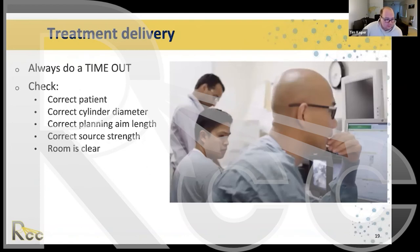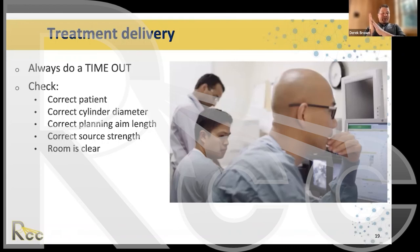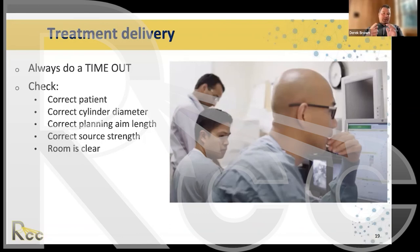Before delivering treatment, we perform a timeout to ensure: correct patient identity, correct cylinder diameter, correct planning aim length in the selected plan, correct source strength, and that no one other than the patient is in the room. This takes about 20 seconds and is very effective in preventing errors when using pre-plans.